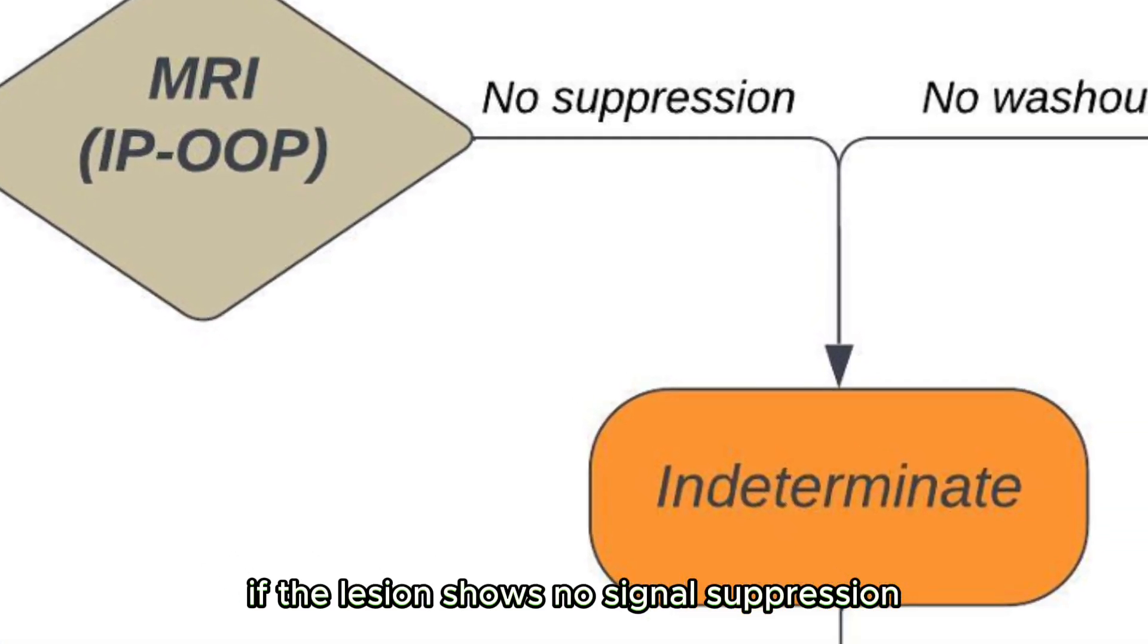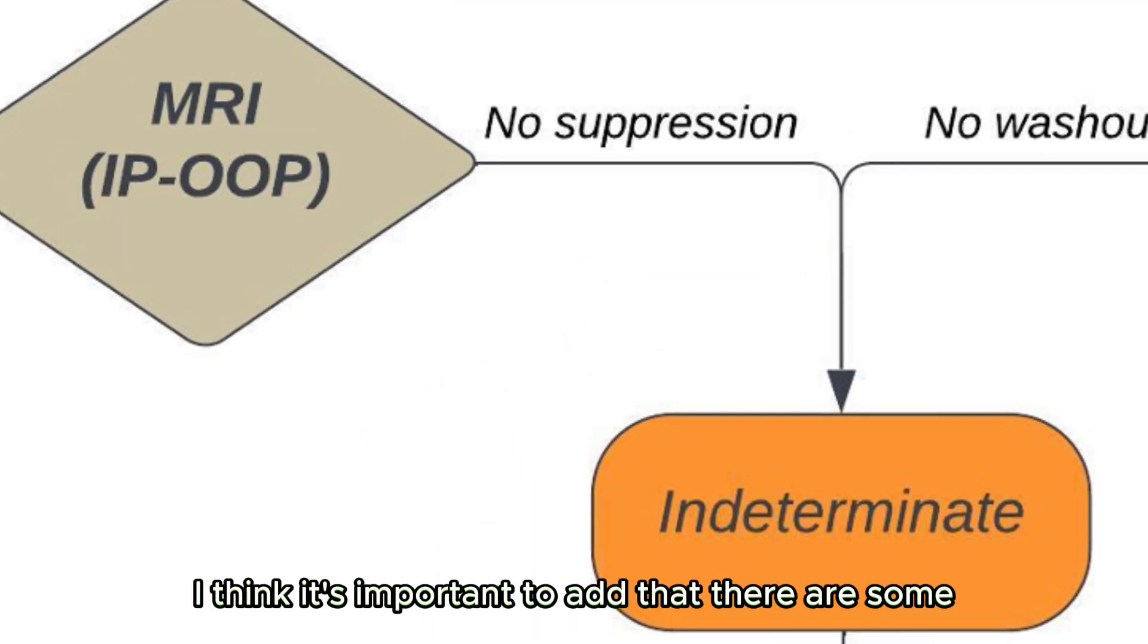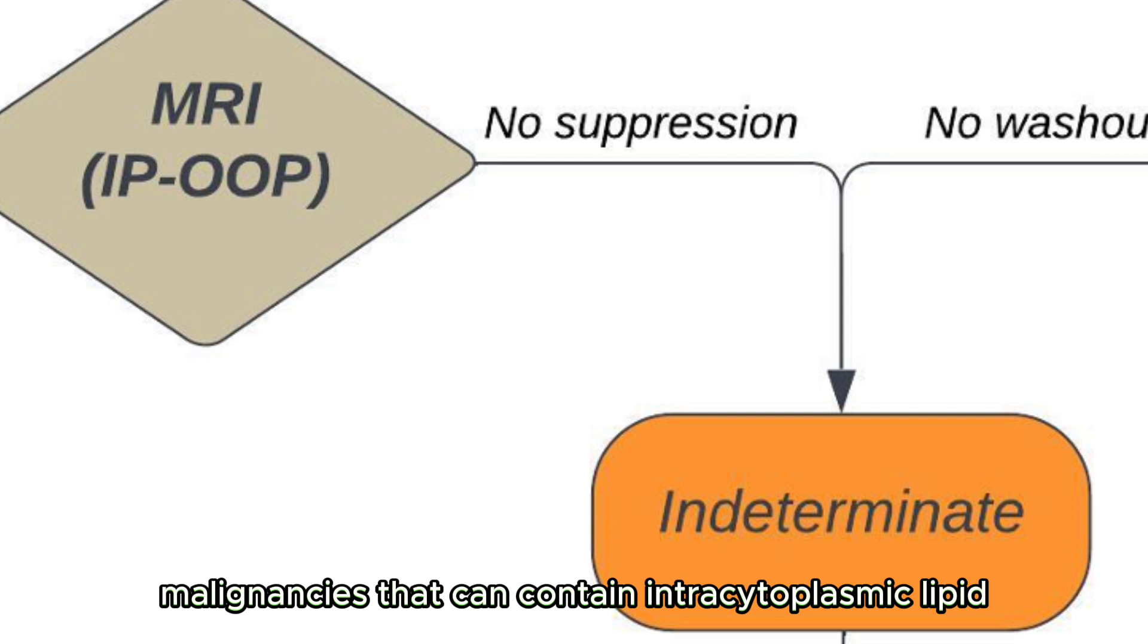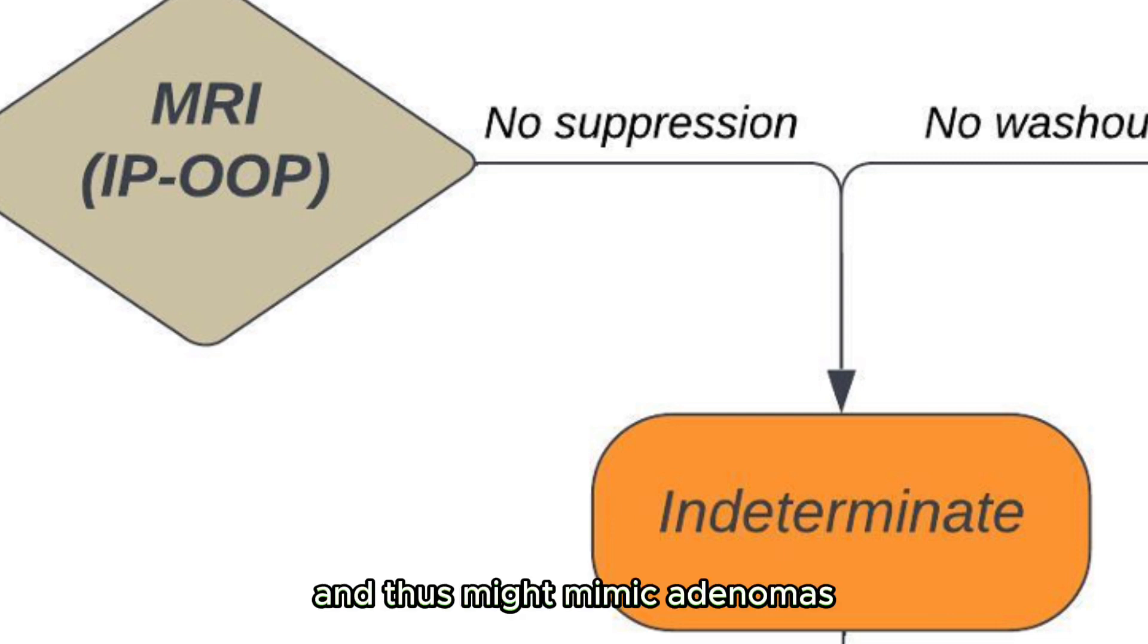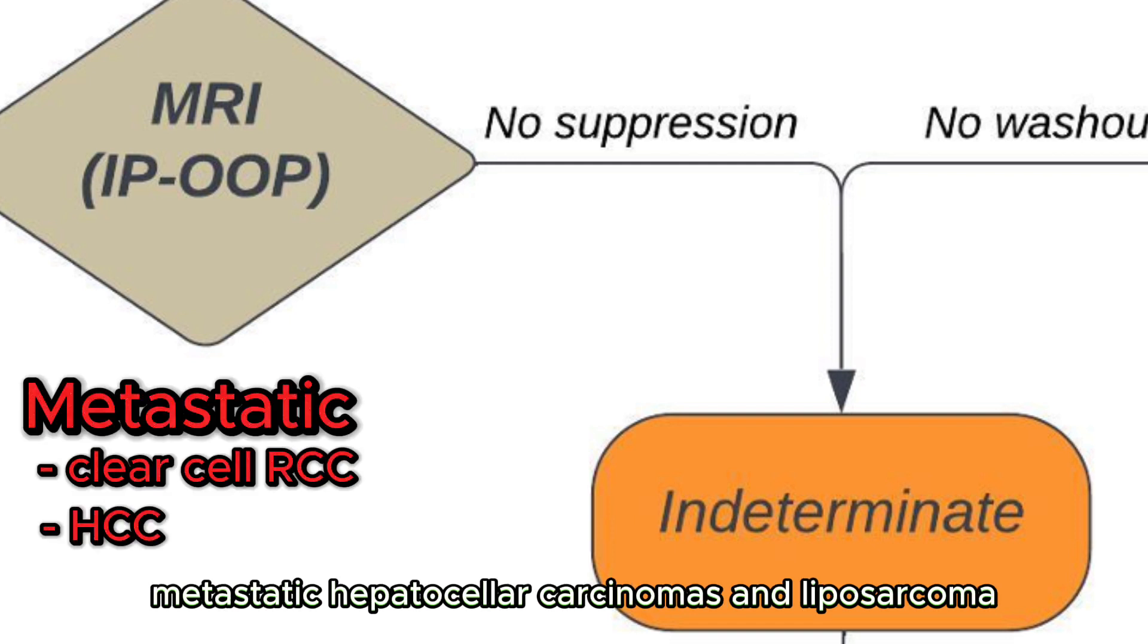If the lesion shows no signal suppression, the diagnosis is indeterminate. And in these cases, we might consider a biopsy. I think it's important to add that there are some malignancies that can contain intracytoplasmic lipid and thus might mimic adenomas. These include metastatic clear cell renal cell cancers, metastatic hepatocellular carcinomas and liposarcoma.